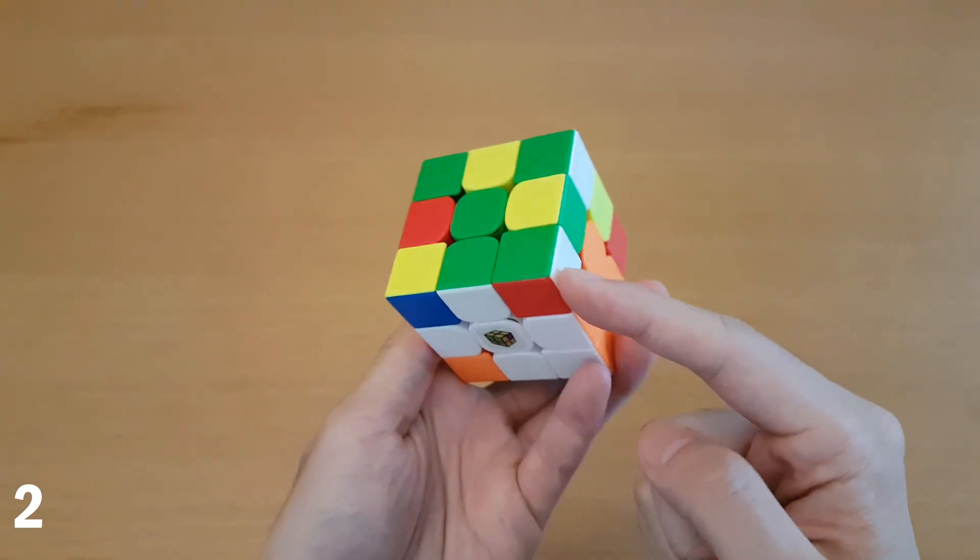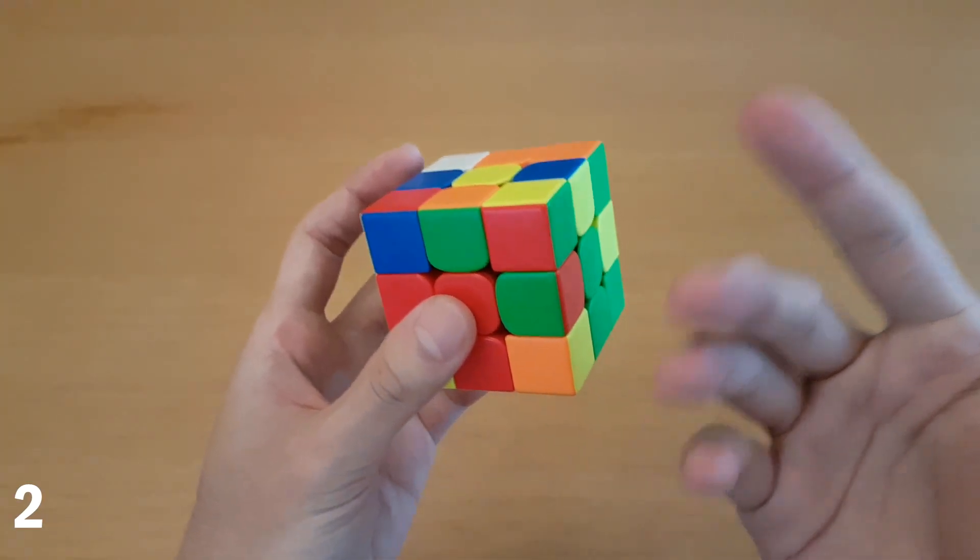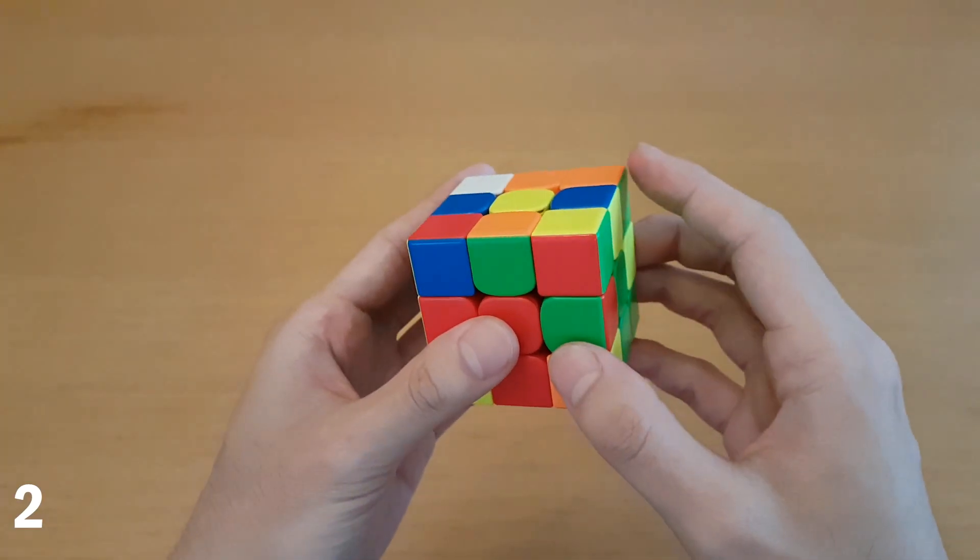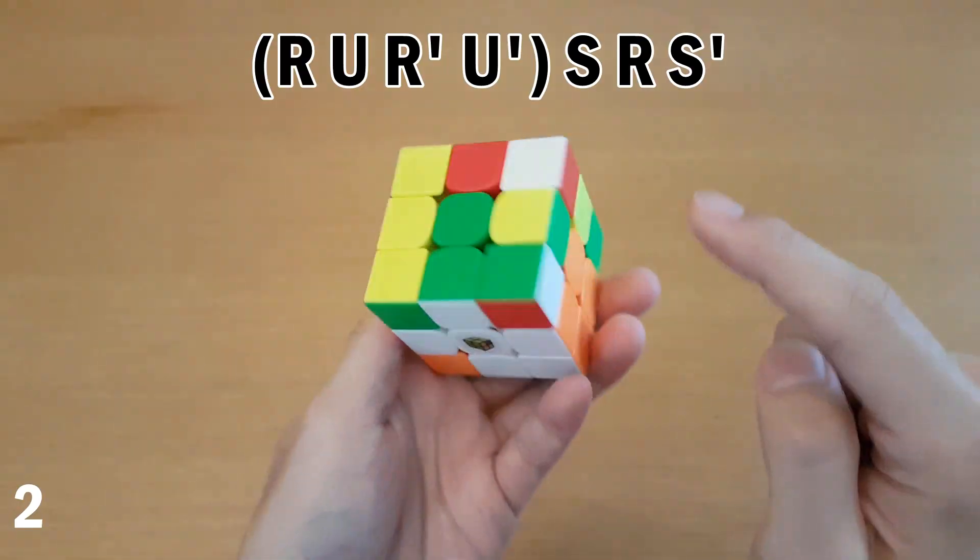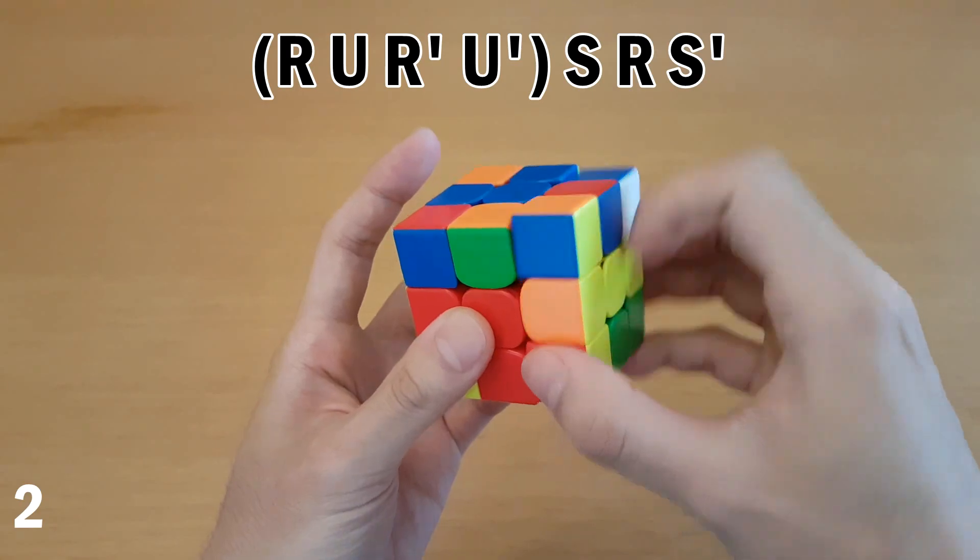This one is a similar case but this time the white of the corner's at the back and what you would do here is take out the edge to set up into a different three mover. So you can take it out like this and set it up into this case, which if you've seen my other F2L tricks videos, you'll know it's done like this.